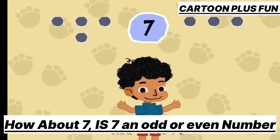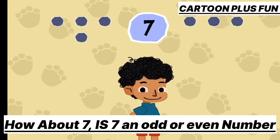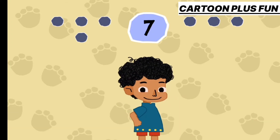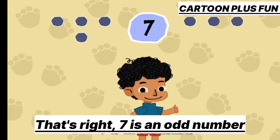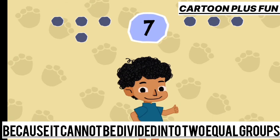How about 7? Is 7 an odd or an even number? That's right! 7 is an odd number because it cannot be divided into 2 equal groups.